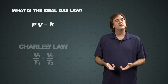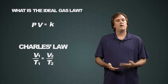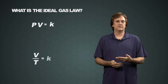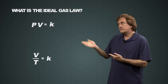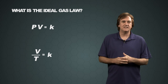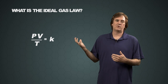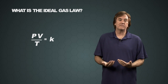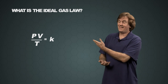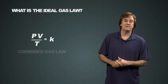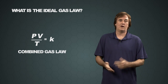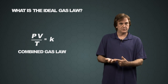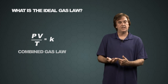Now we're going to bring in Charles' Law, where volume over temperature is a constant. So we simply add a T to this problem in the denominator. Now we've got what is classically known as the combined gas law: pressure times volume over temperature is a constant.